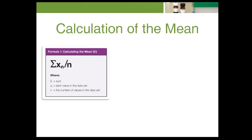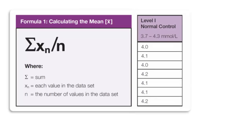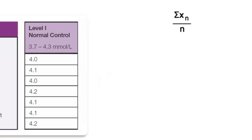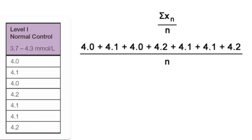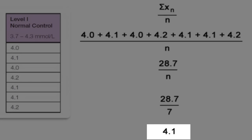To calculate a mean for a specific level of control, first add all the values collected for that control, then divide the sum of these values by the total number of values. For instance, to calculate the mean for the normal control, level 1, find the sum of the data. The sum is 28.7 millimole per liter, and the number of values is 7. Therefore, the mean for the normal control is 4.1 millimole per liter.